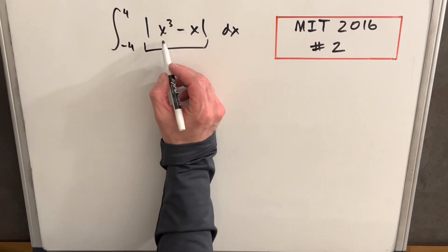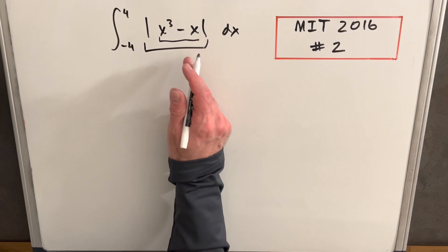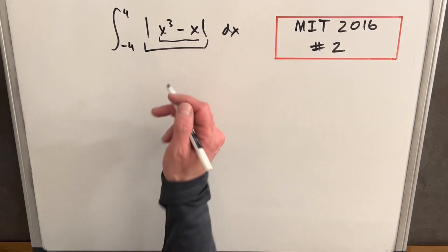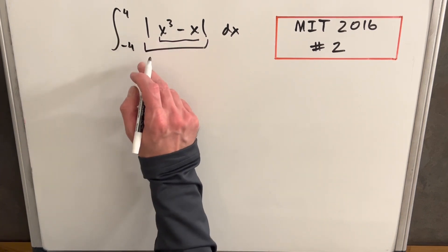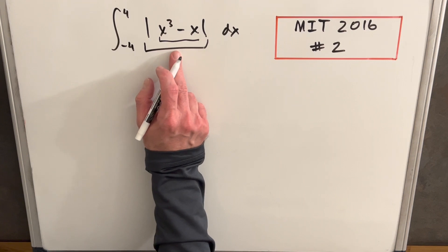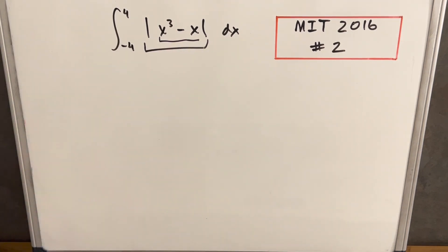And the reason I know that is because this inner function x cubed minus x is odd, and we have the composition of an even with an odd function. The result has to be even, but let's just show that so it's clear.